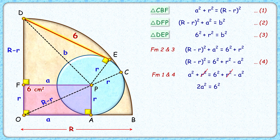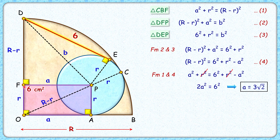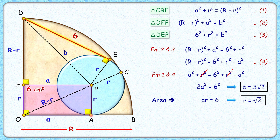So a² = 18 and a = 3√2 centimeters, which is the length of the rectangle. Since the area of the rectangle is 6 cm², we get: area = length × breadth = a × r = 6 cm². Putting the value of a as 3√2, we get small r, the radius of the circle, as √2 centimeters.